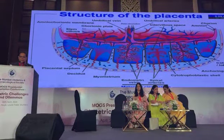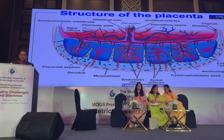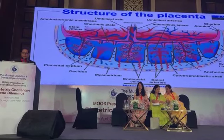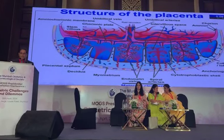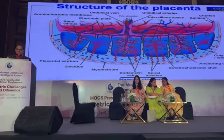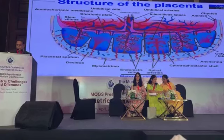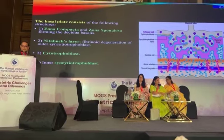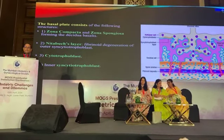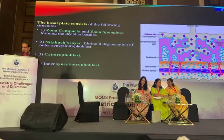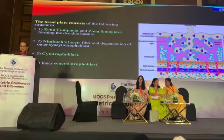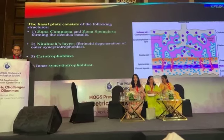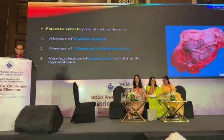The maternal circulation is on the lower side and the fetal circulation is at the top. We see the cotyledons, the myometrium and the decidua. The umbilical artery leaves and the umbilical vein enters into this whole system, and we have the syncytiotrophoblast and the cytotrophoblast. You can see something like decidua basalis, formed by zona compacta and zona spongiosa, with the Nitabuch's layer in between. This layer is absent in Placenta Accreta, and that is the worst scenario in such a situation.